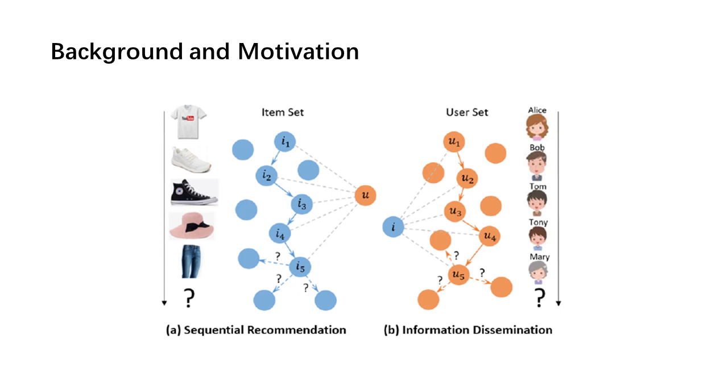In information retrieval area, there are two classic problems: sequential recommendation and information dissemination. They both use the historical observed sequence and aim at predicting the future interaction behaviors, but they share a dual structure.